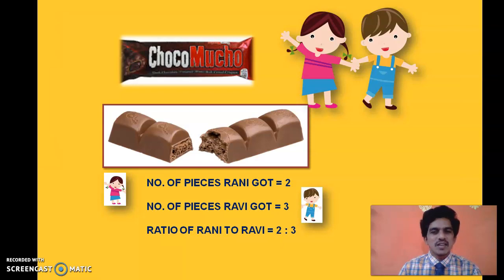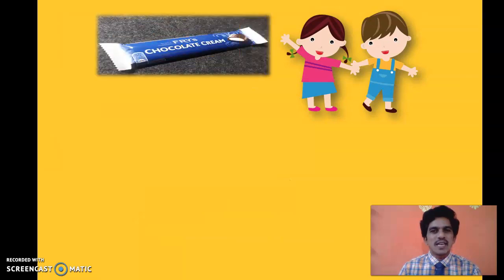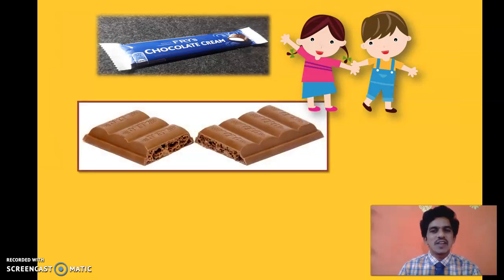We have already learnt about ratios in our lower classes. Then the other day, their father brought one more chocolate after two or three days. This chocolate was divided into portions: one portion had three pieces and the other portion had four pieces. Rani took just a piece less than her brother.